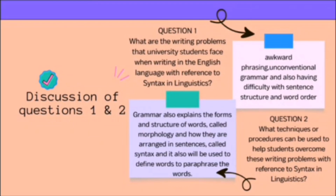My articles are based on the improvement of English writing skills through blended learning among university students in Malaysia, and also students' problems in learning English as a second language among MDAB students at UiTM Melaka. For question 1, based on these two research articles, they have mentioned that students have difficulty with awareness of paraphrasing in terms of unconventional grammars, and also difficulty with sentence structure and word order.